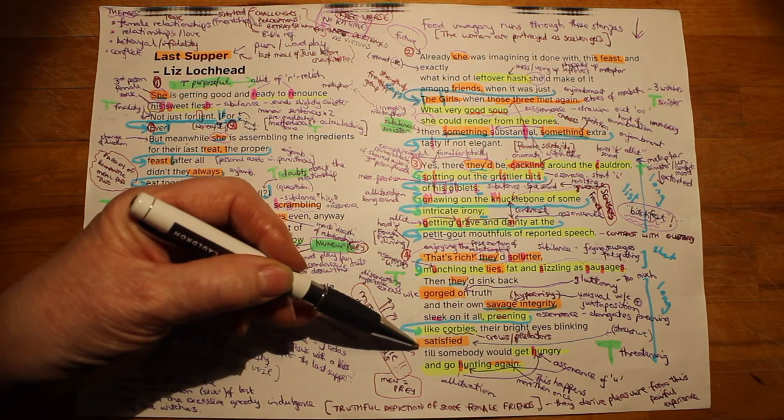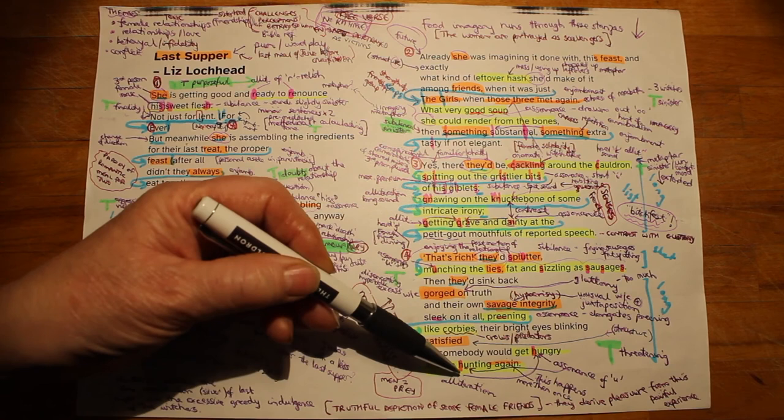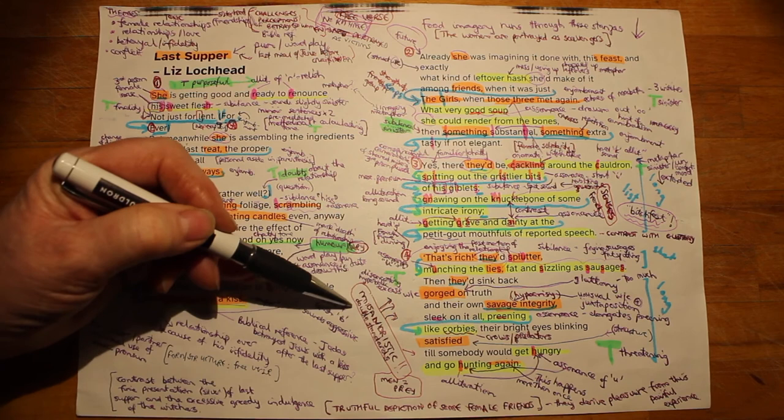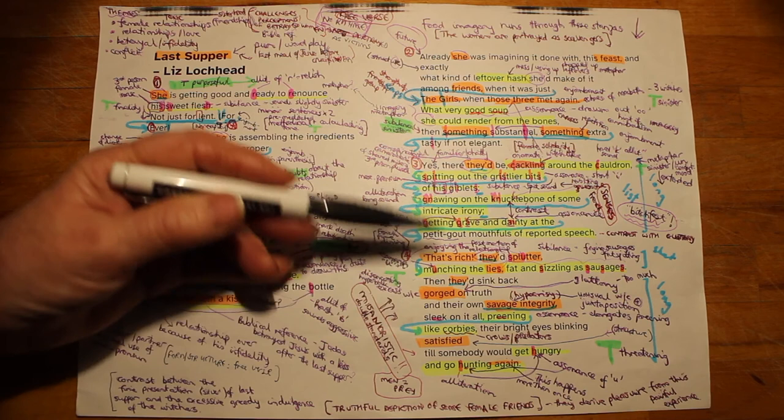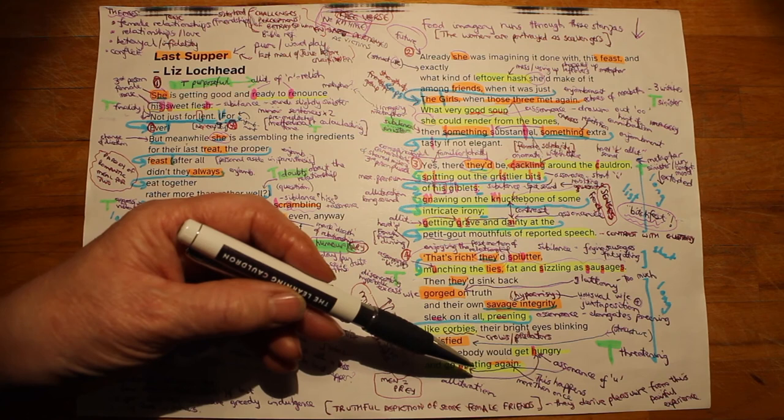But there's something even worse that comes at the end, till somebody would get hungry and go hunting again. So we've got the assonance of the uh sound in hungry and hunting, which really makes those two words stand out. And the word again, this suggests that this process has happened more than once and that it could happen again. So it portrays these women as rather misandristic, so they are effectively man-hating, and that they see men as prey. And this suggests double standards. So rather than doing the obvious, being sorry for the person who's being wronged, Lochhead has rather turned it on its head. And she's portrayed the other side, whereby there can be toxic female relationships where women actually enjoy poring over the details of such an unpleasant relationship when it comes to an end.